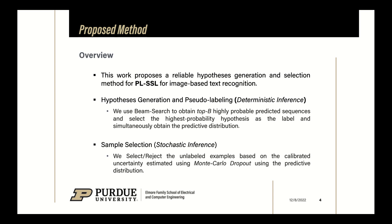In this work, we seek to propose a reliable hypothesis generation and a robust sample selection method for sequential pseudo-label-based semi-supervised learning in the context of image-based text recognition. For hypothesis generation and pseudo-labeling, we use beam search inference to obtain the top B highly probable sequences for a given input image, and use B number of predictions to approximate the predictive distribution, and then only select the highest probability or maximum confidence sequence as the pseudo-label.